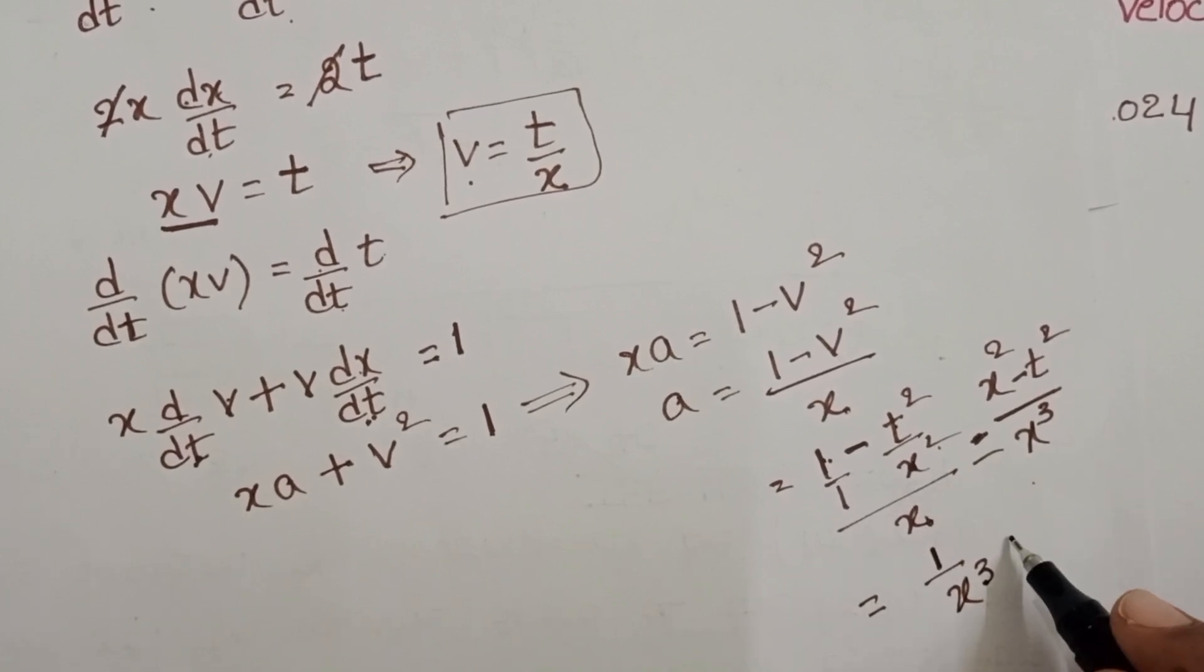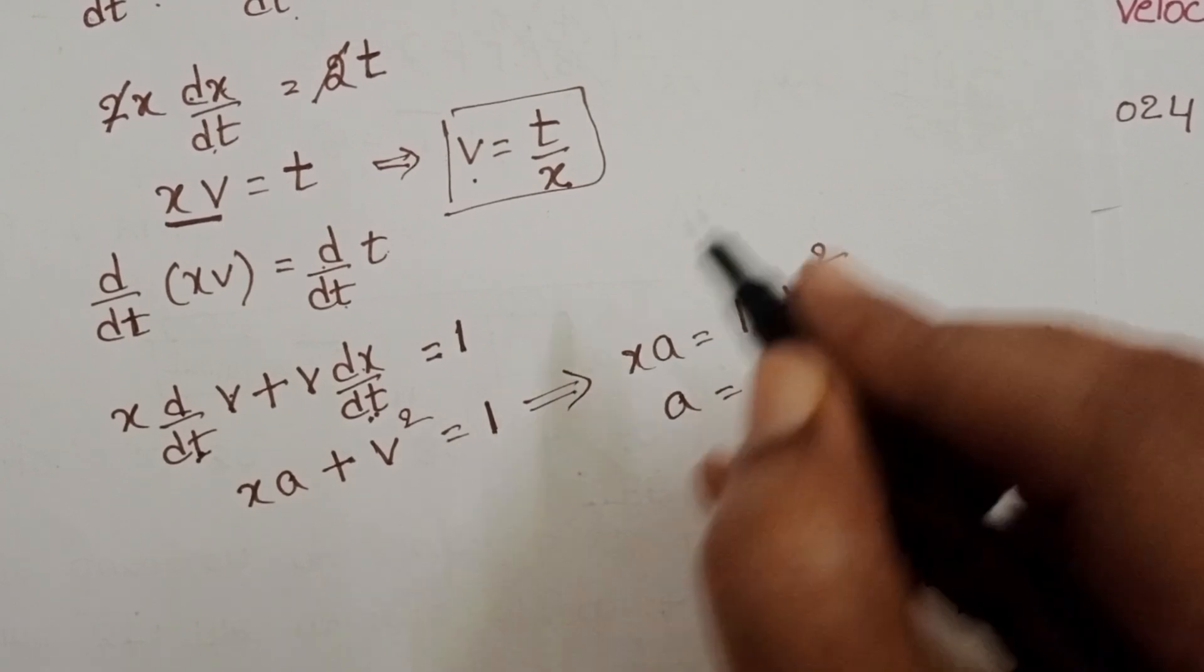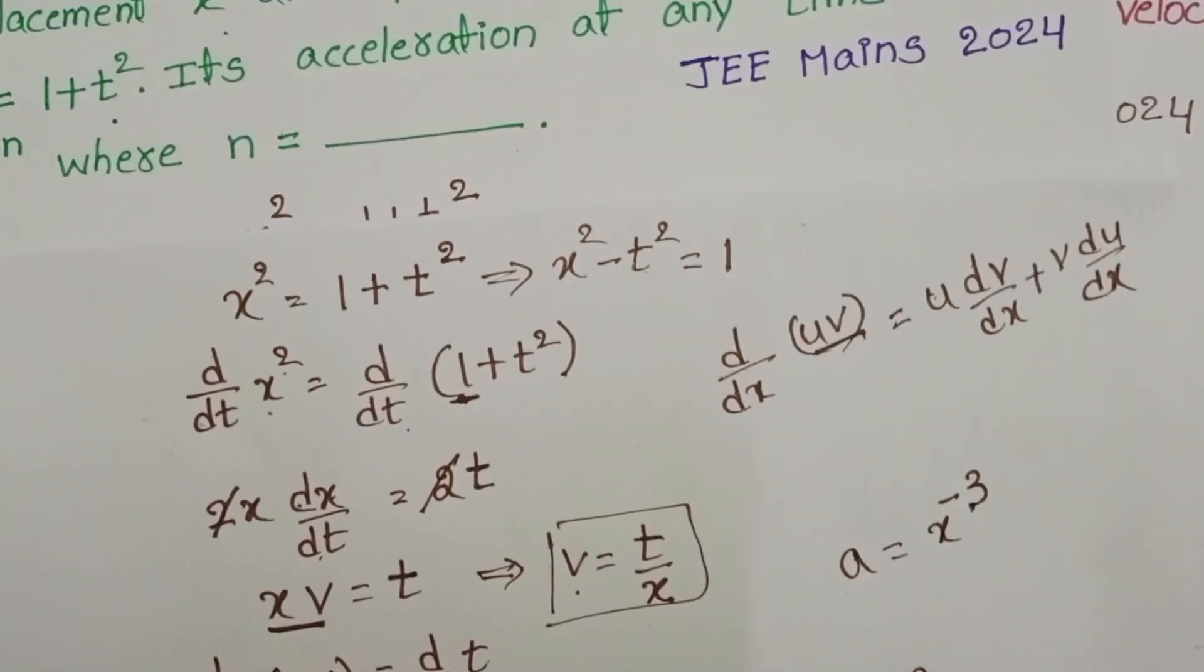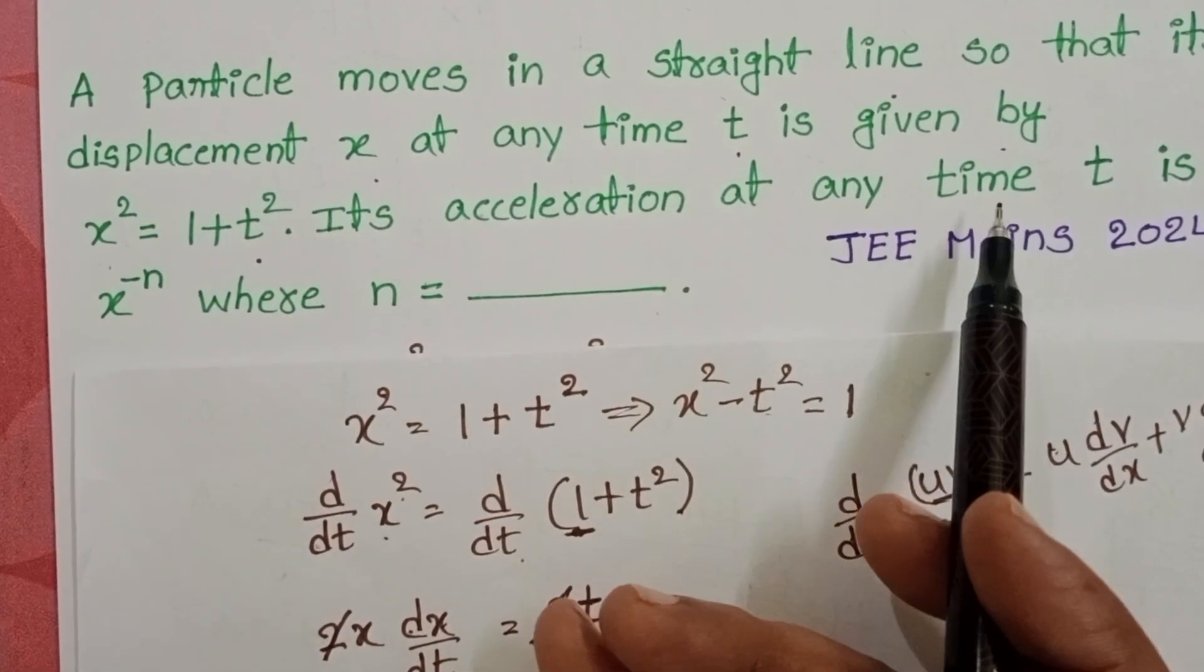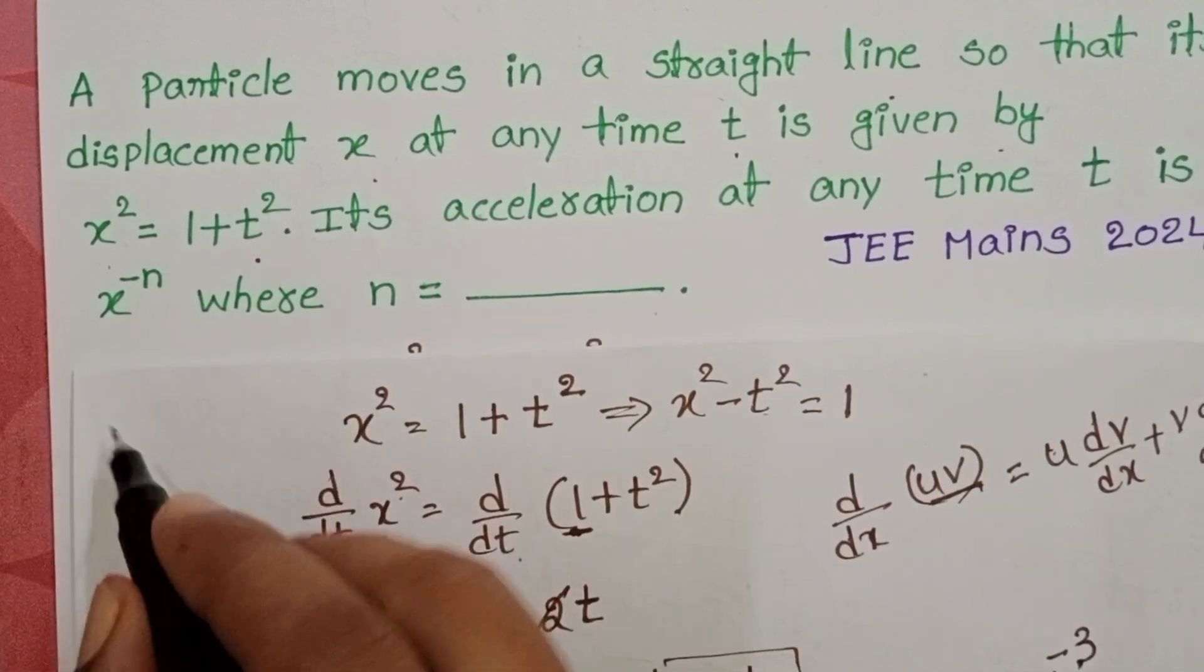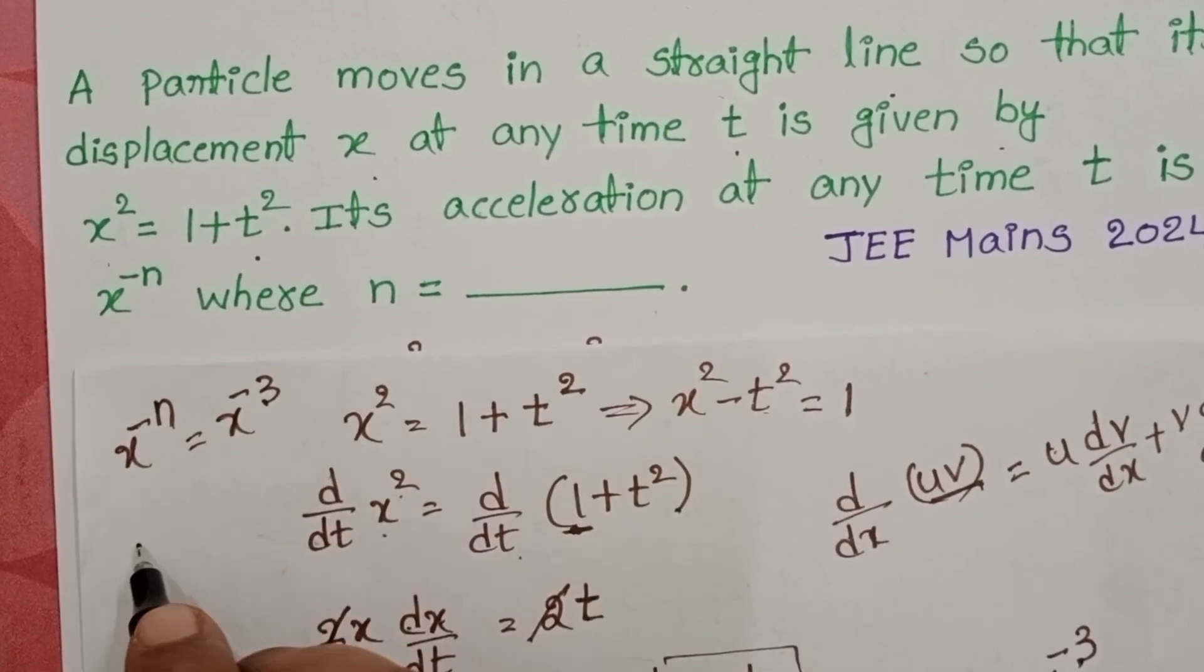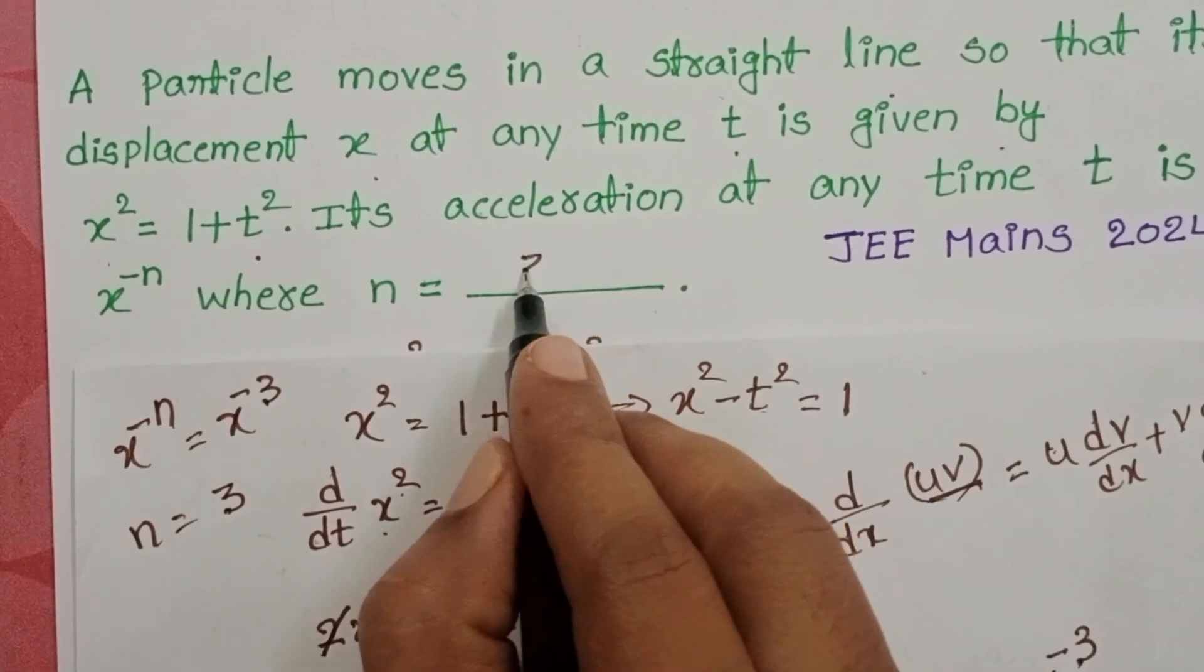So acceleration equals x^(-3). Here given relation is acceleration of the particle at any time t is x^(-n). x^(-n) equals x^(-3). So n equals 3. n value is 3.